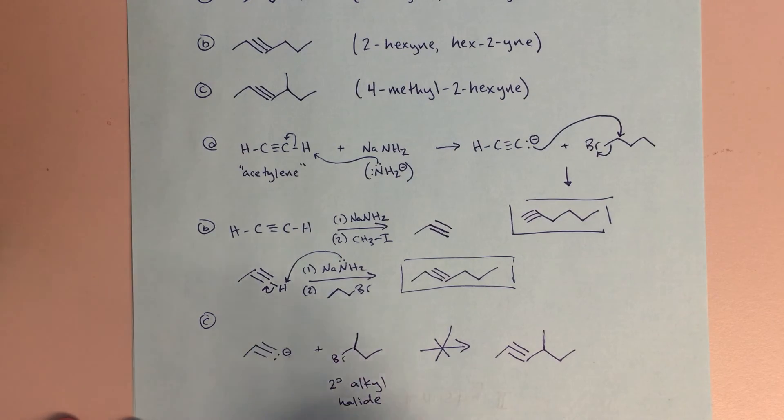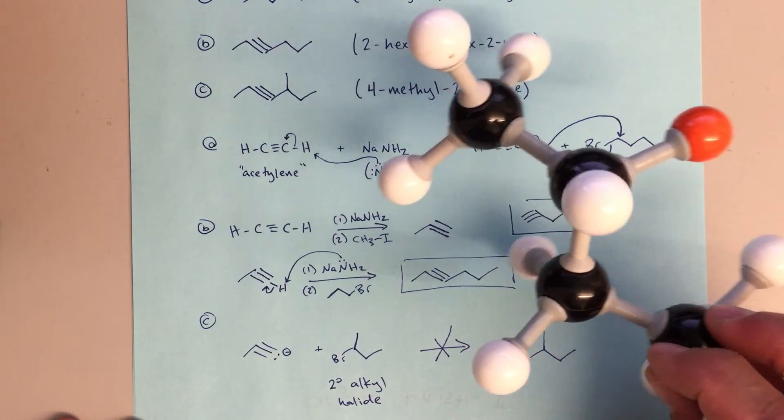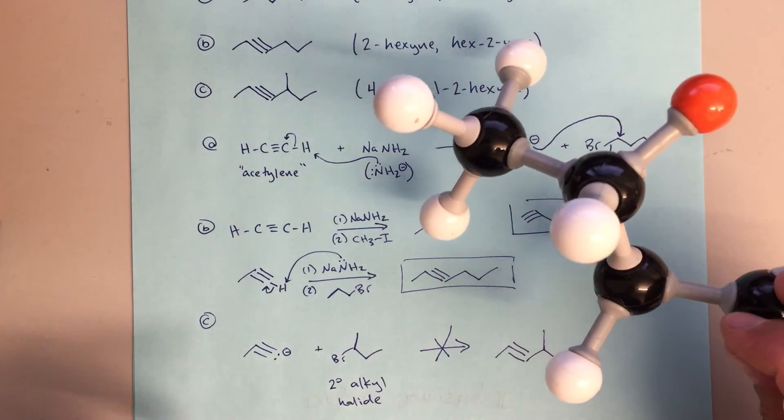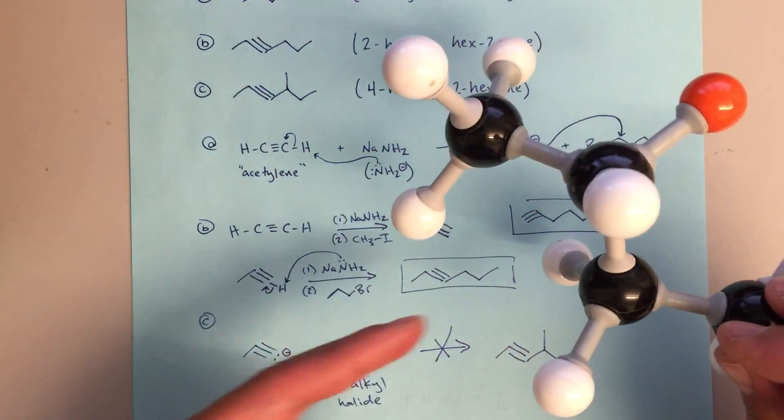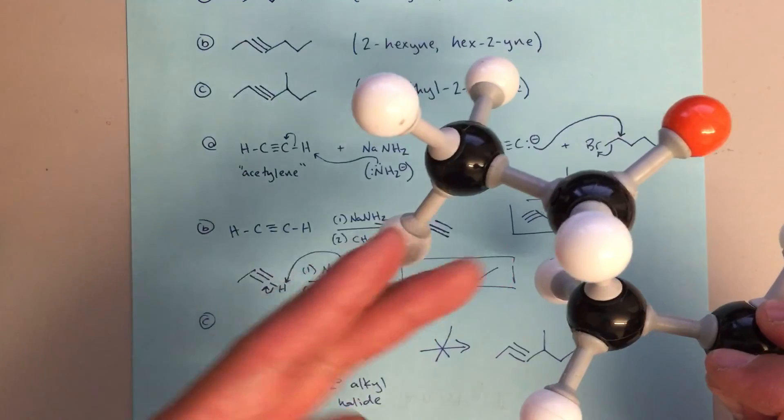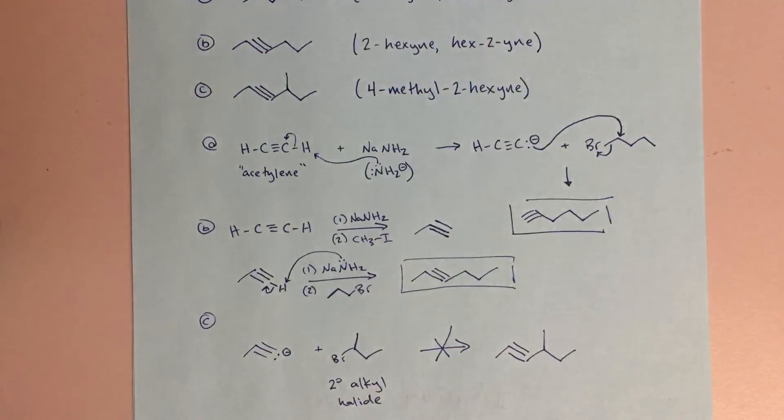But when we actually look at the models, if you make the model, I think it does become a lot more obvious that, yeah, this methyl group is in the way, this methylene group is in the way of that backside attack to get in there and access that central carbon. All right, hope that helps.